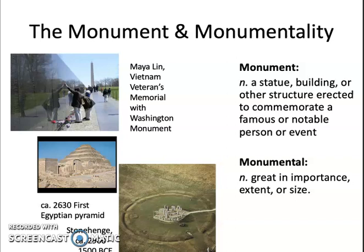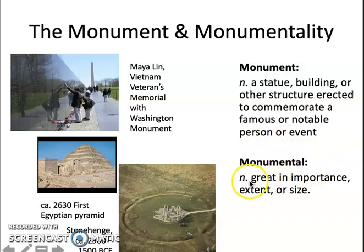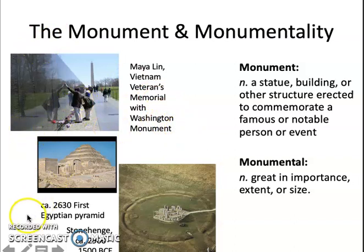So it belongs in the world cultural traditions of monuments and monumentality. A monument is a statue, building, or other structure — something significantly large and durable erected to commemorate a famous or notable person or event. Monumental suggests both greatness in importance but also literally in size. The idea of scale, size, and importance are all fused together in monuments like Maya Lin's Vietnam Memorial, like the Egyptian pyramids, like Stonehenge. Notice they're all made of stone.